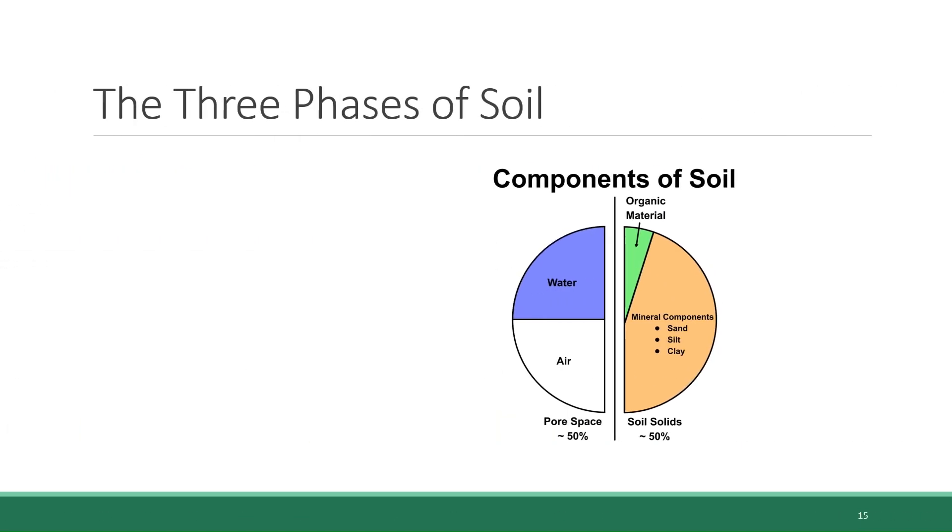So now that we understand where soil comes from, we're going to transition to talking about what it is made of in a bit more detail. We can think about soil as being divided into three phases: a solid phase, a liquid phase, and a gaseous phase. Organic and mineral material are both considered to be part of the solid phase of soil because they are made of solid matter. The liquid phase of soil is the water found in the pores between solid particles. And the gas phase of soil is the air found in the pores between particles. We're going to look at each of these components one by one.